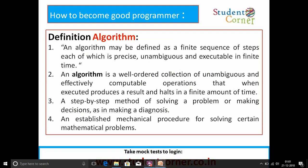Second definition: an algorithm is a well-ordered collection of unambiguous and effectively computable operations that, when executed, produces a result and halts in a finite amount of time. Third definition: a step-by-step method of solving a problem or making decisions, such as making a diagnosis. Fourth definition: an established mechanical procedure for solving certain mathematical problems. You can use any of these definitions.